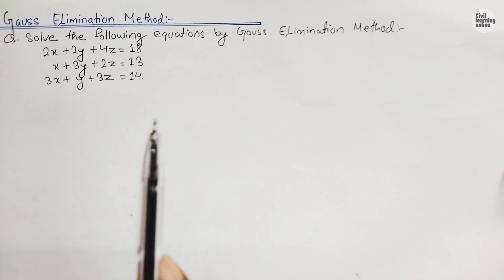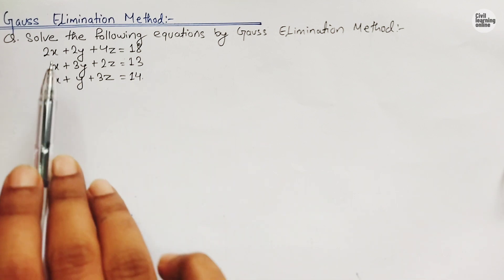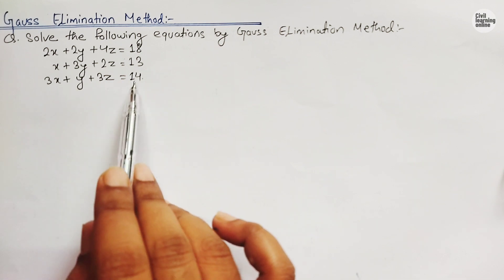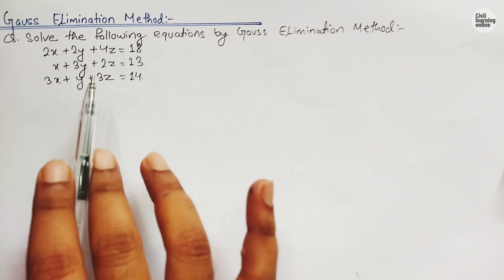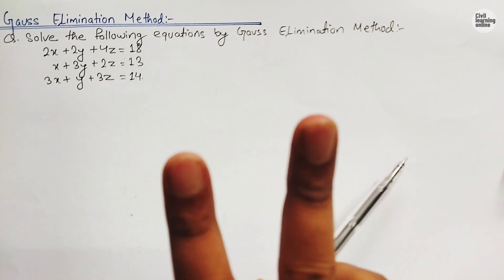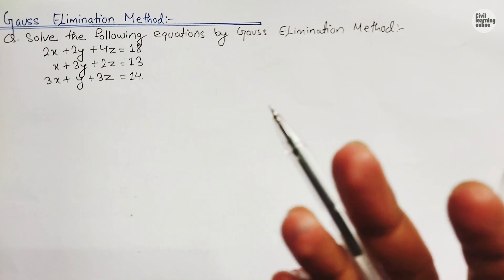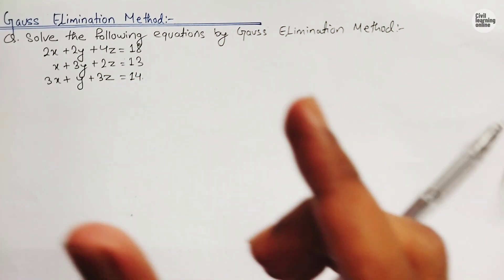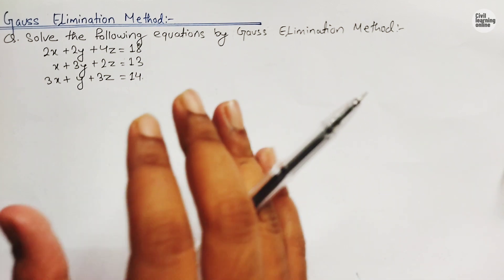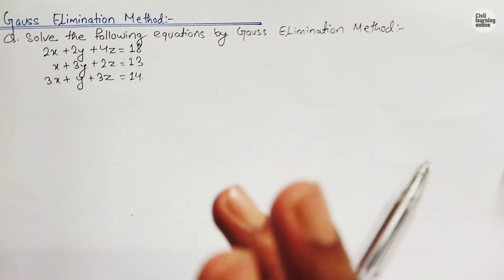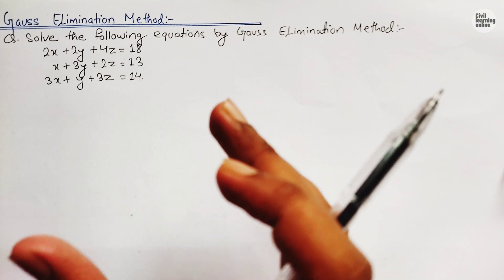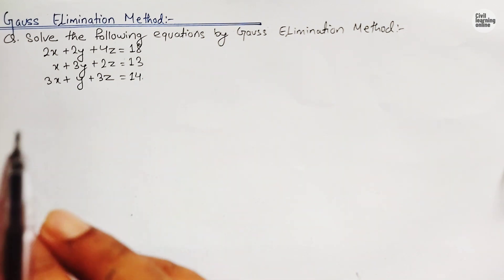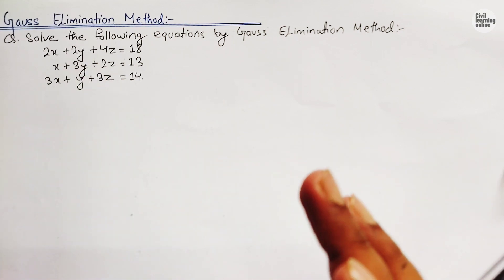Let's begin the solution. We are provided with three linear equations: 2x + 2y + 4z = 18, x + 3y + 2z = 13, and 3x + y + 3z = 14. We are asked to solve this system using the Gauss elimination method. There are two ways — converting to an augmented matrix, or using the power method. In this video I am going to solve this numerical using the augmented matrix method.